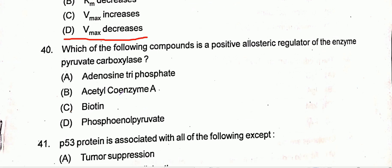Question number 40: Which of the following compounds is a positive allosteric regulator of the enzyme pyruvate carboxylase? Option B is the correct one, that is acetyl-coenzyme A.